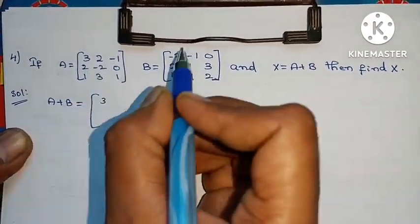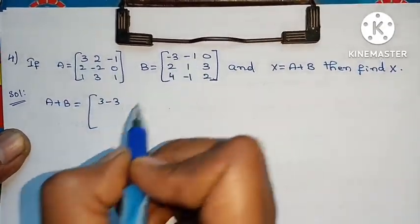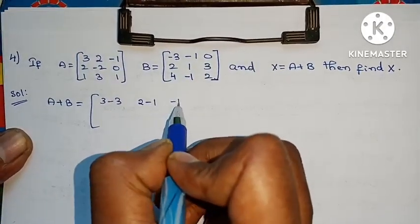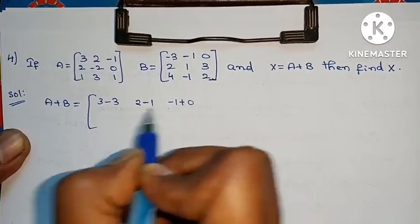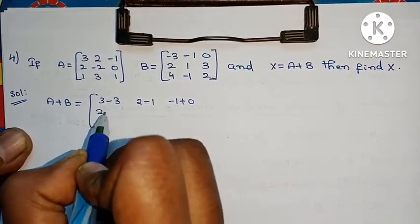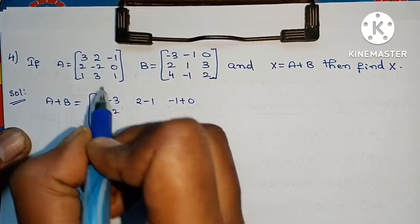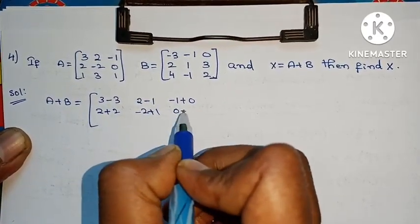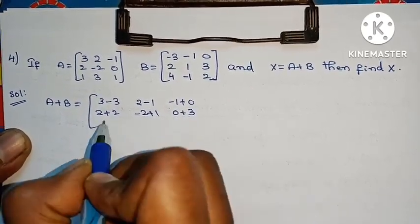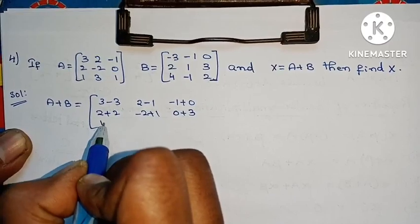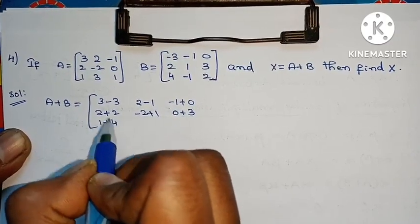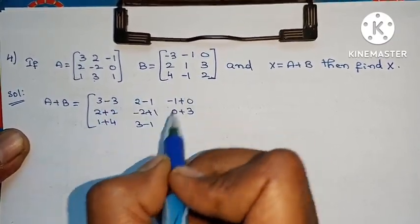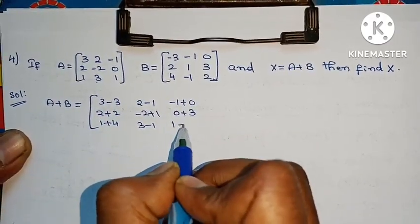Direct step: 3, minus 3, 2, minus 1, minus 1, plus 0, 2, plus 2, minus 2, plus 1, 0, plus 3, 1, plus 4, 3, minus 1, 1, plus 2.